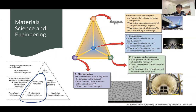First, we need to know about the elements and compositions in a material — what kind of elements are contained, and how the elements are bonded to each other. Then we look at the microstructure of the material, what kind of synthesis and process we need to use to achieve that microstructure and performance. At the same time, we need to consider the fabrication costs. This is generally what material science engineering covers.